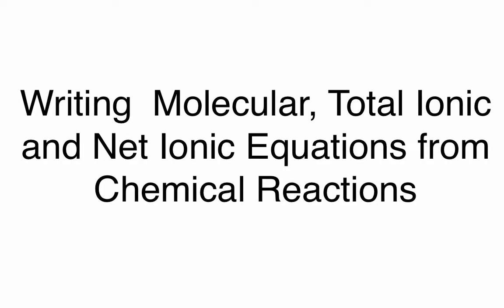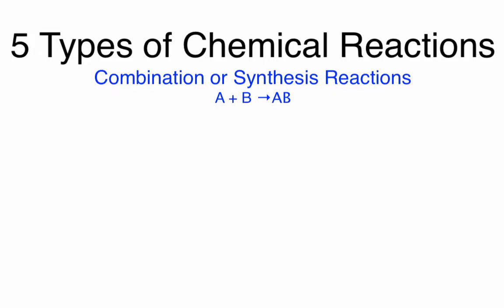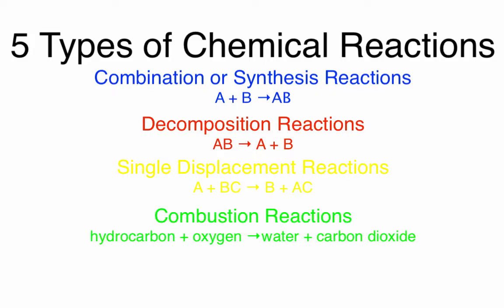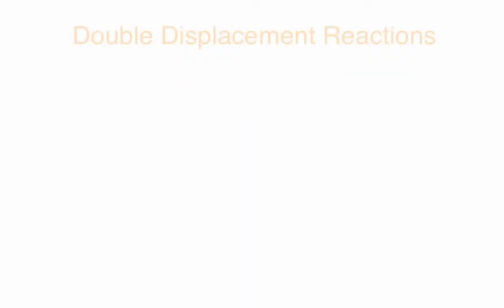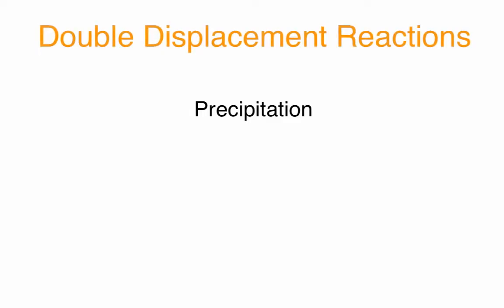We have previously gone over writing a chemical reaction. The types of chemical reactions we have gone over are combination or synthesis reactions, decomposition reactions, single displacement reactions, combustion reactions, and double displacement reactions. Remember that there are three types of double displacement reactions: precipitation, gas, and acid-base reactions.